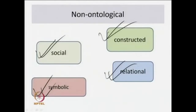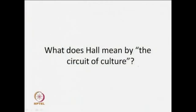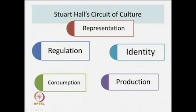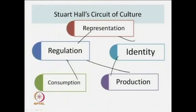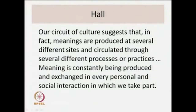Question 3: how is the constructionist approach non-ontological? The constructionist approach is non-ontological because it talks about representation, culture, reality, and knowledge as things that are social and not individual or mimetic — meaning and representation are constructed, symbolic, and relational in a system. Question 4: what does Stuart Hall mean by the circuit of culture? He means that elements of culture are not to be seen in their singularity or as discrete terms. The circuit of culture is such that representation, regulation, consumption, production, and identity act in a whole circuit — meanings are produced at different sites and circulated through different processes or practices.